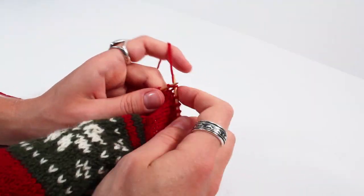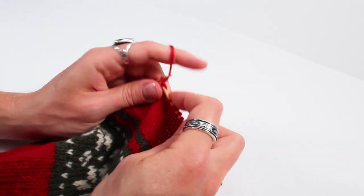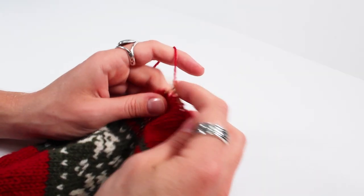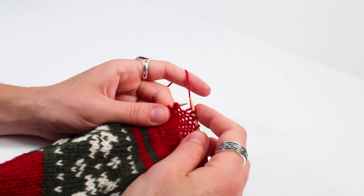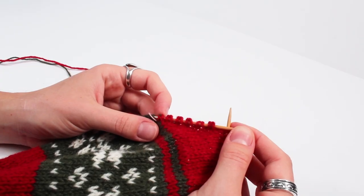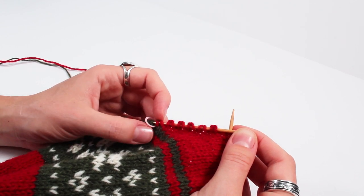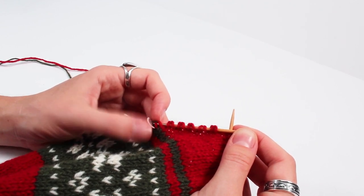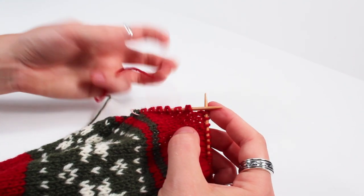Continue working back and forth working one less stitch each row until you've worked six total short rows. You can count each double stitch as one completed short row. So here you can see I've completed the six short rows and I can count my double stitches.